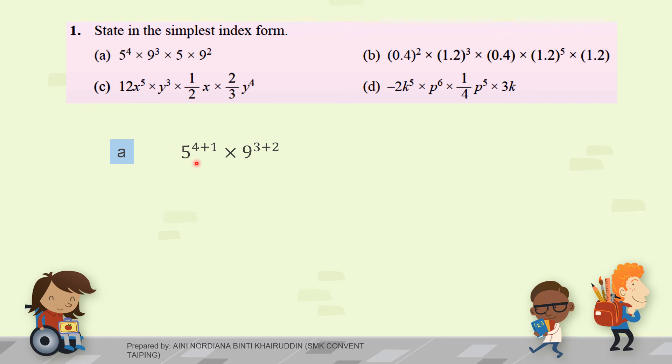So, I use the shortcut here. Just put 5, 4 plus 1 here. And then, 9 to the power of 3 plus 2. So, don't forget your answer must include the multiplication symbol here.